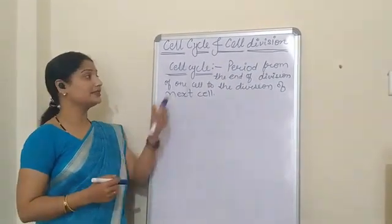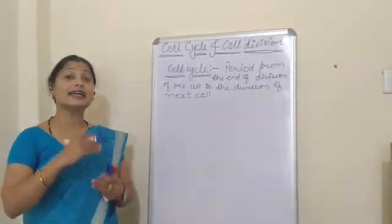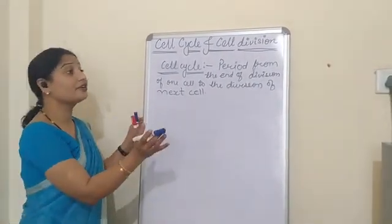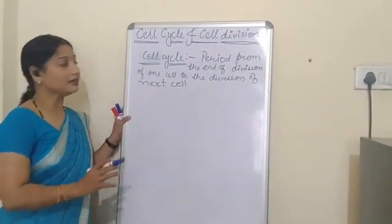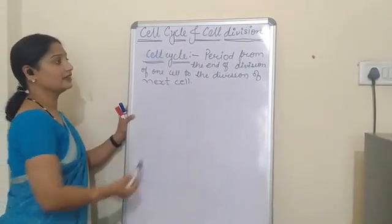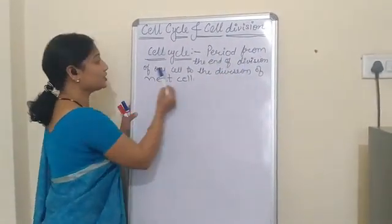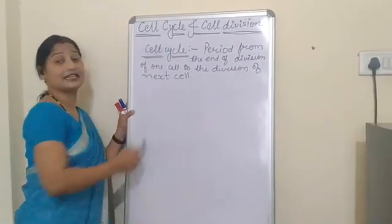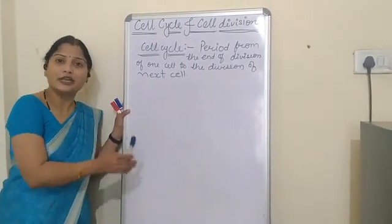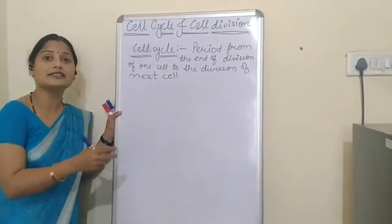First we will deal with the cell cycle. A cycle means anything that repeats after a regular interval of time. The meaning of cell cycle is the period from the end of division of one cell to the division of the next cell. Or we can say that cell cycle is a sequence of events from the division of one cell to the division of the same next cell.